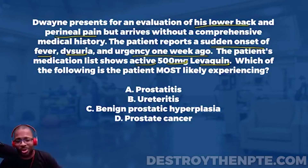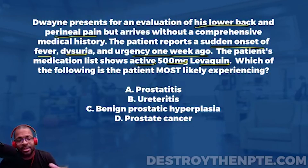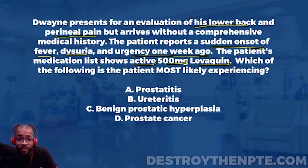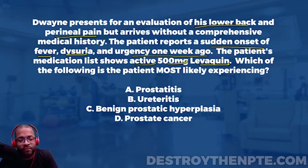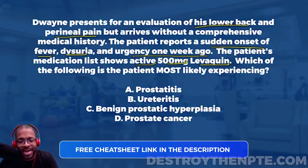The medication list shows active 500 milligrams of Levaquin — stop there. Levaquin, also known as levofloxacin, is an antibiotic. The fact that the patient is actively taking this tells me there's potentially a bacterial infection going on. Now let's look at the answer choices: A) Prostatitis, B) Ureteritis, C) Benign prostatic hyperplasia, D) Prostate cancer.